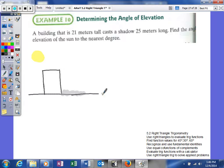Here's what we know: the building height is 21 meters, the shadow is 25 meters, and we're looking for the angle of elevation to the sun to the nearest degree. That's the angle right here.